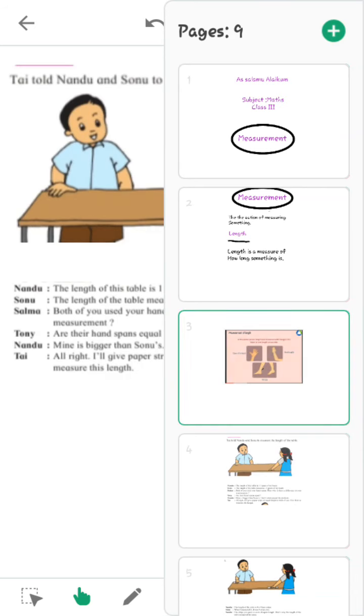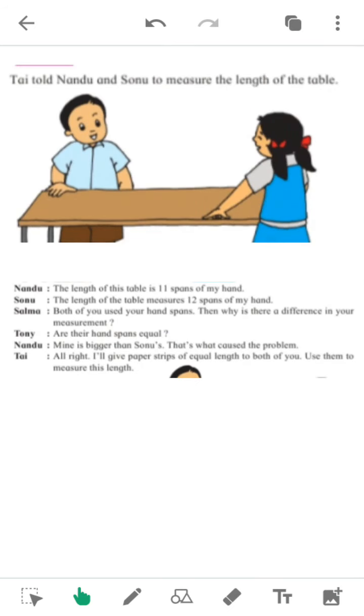For example, Tai told Nandu and Sonu to measure the length of the table. Nandu, the length of this table is 11 spans of my hand. How many spans of hand? 11 spans of Nandu's hand.